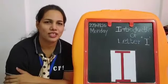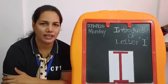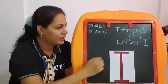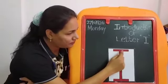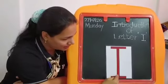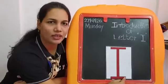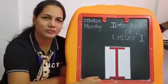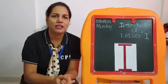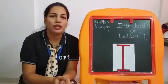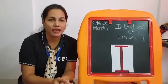Now we are going to learn letter I. That is sleeping line, standing line, and one more sleeping line. Letter I makes a sound E. I makes a sound E.